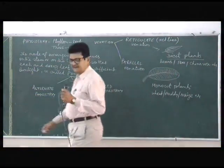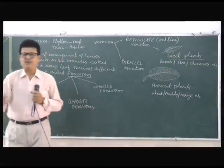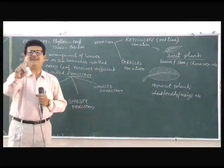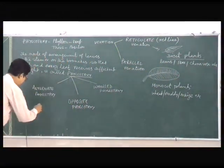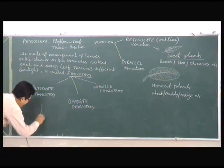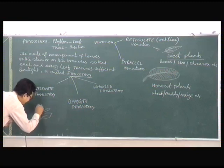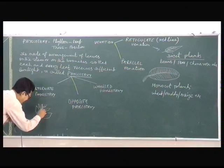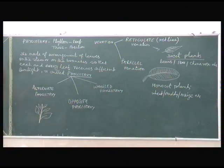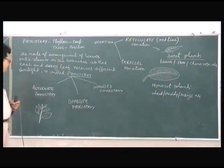In alternate phyllotaxy, we have one leaf from each node. This sort of phyllotaxy we call alternate phyllotaxy. We see it in normal dicot plants, and a rose has got alternate phyllotaxy.